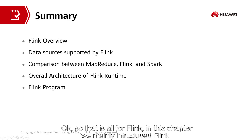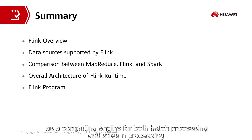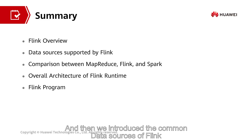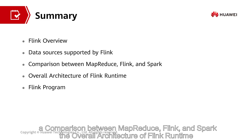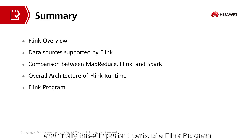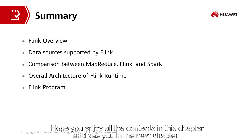That's all for Flink. In this chapter, we mainly introduced Flink as the computing engine for both batch processing and stream processing. We also introduced the common data sources for Flink, a comparison between MapReduce, Flink, and Spark, the overall architecture of Flink runtime, and finally the three important parts of a Flink program. Hope you enjoy all the contents in this chapter, and see you in the next chapter.